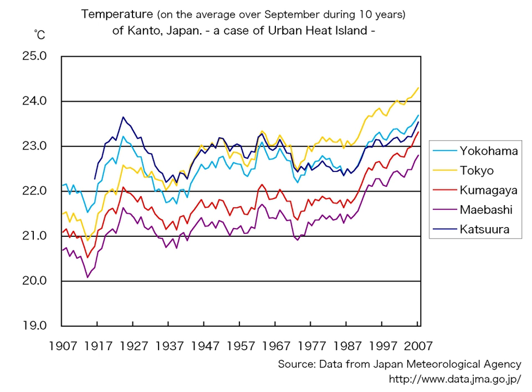An urban heat island is an urban area or metropolitan area that is significantly warmer than its surrounding rural areas due to human activities. The temperature difference is usually larger at night than during the day, and is most apparent when winds are weak. UHI is most noticeable during the summer and winter. The main cause is the modification of land surfaces, while waste heat generated by energy usage is a secondary contributor.